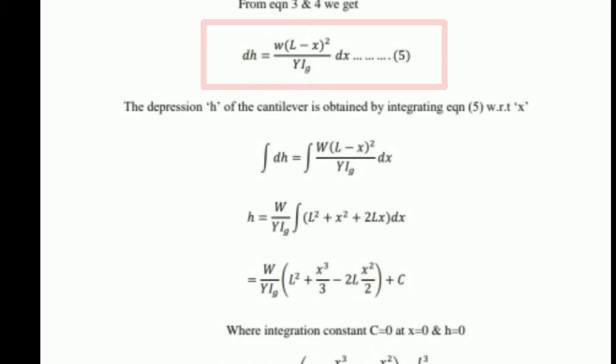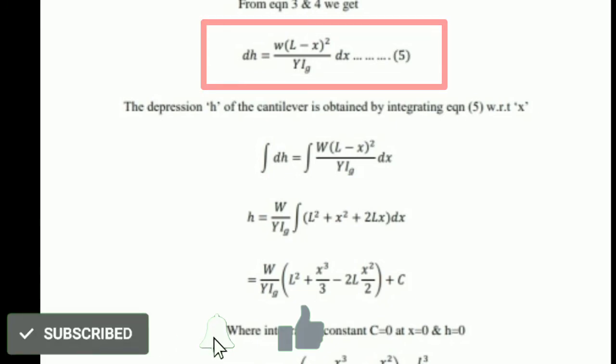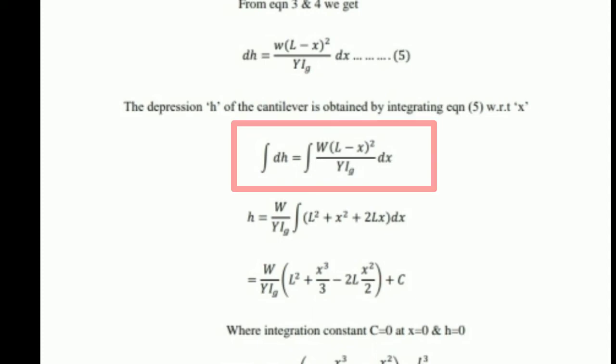Using Equation 3 and Equation 4 we get Equation 5: dh = W(L − x)² / (Y × Ig) × dx. To find the total depression h, we integrate Equation 5 with respect to x. Integrating gives: ∫dh = ∫W(L − x)² / (Y × Ig) dx.